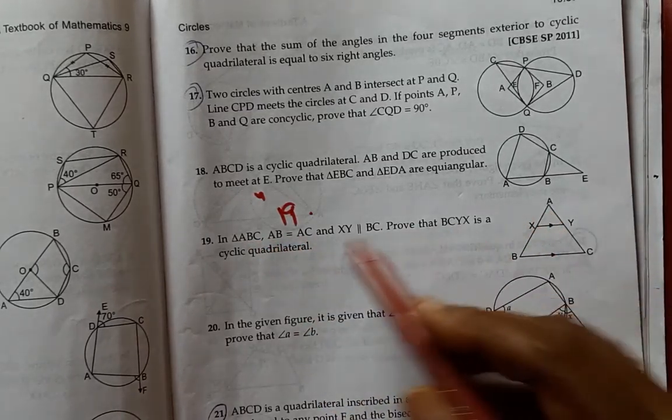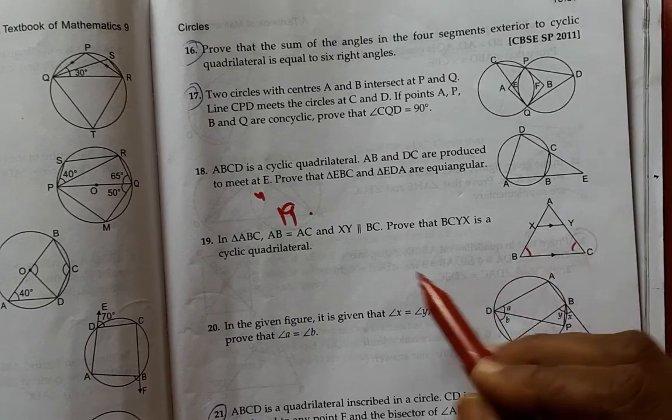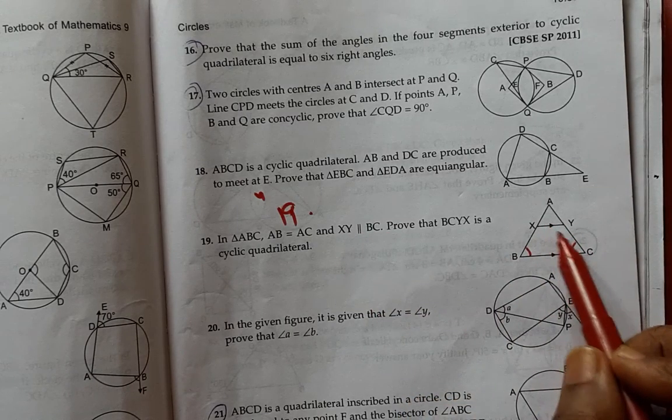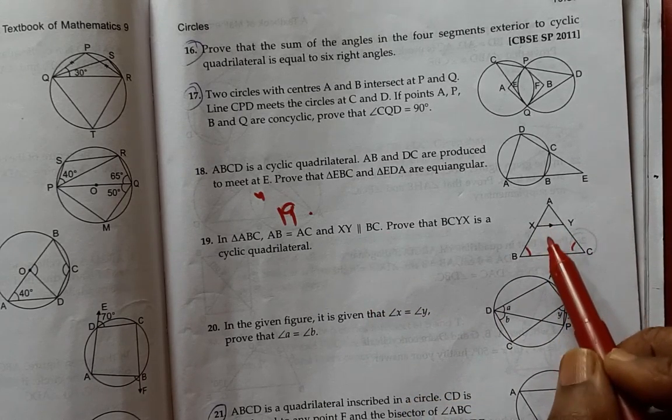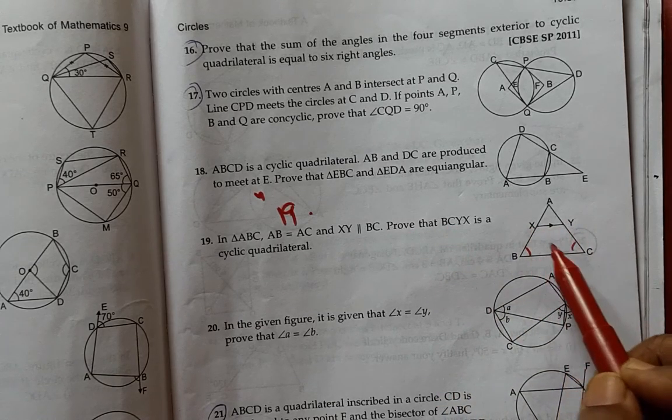The 19th question: In triangle ABC, AB equals AC, so these two angles will be obviously equal, and XY is parallel to BC. Now prove BCYX is a cyclic quadrilateral.